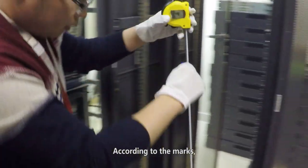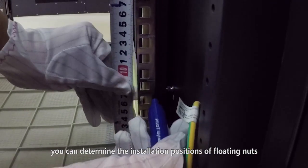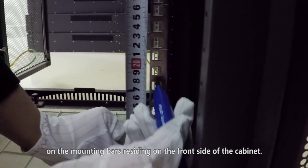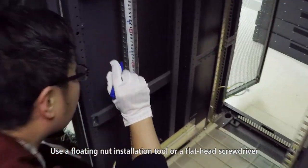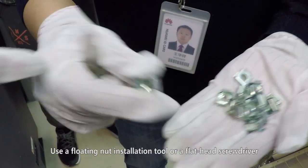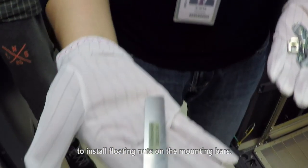According to the marks, you can determine the installation position of floating nuts on the mounting bars residing on the front side of the cabinet. Use a floating nut installation tool or a flat head screwdriver to install floating nuts on the mounting bars.